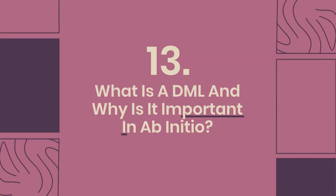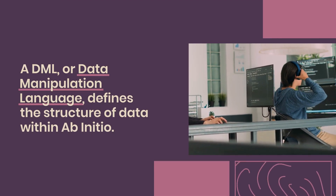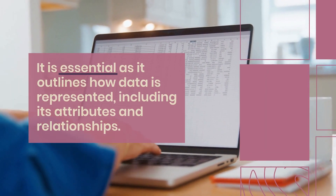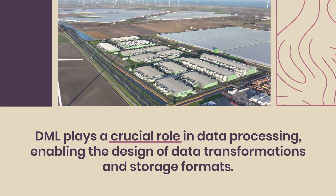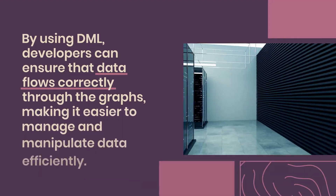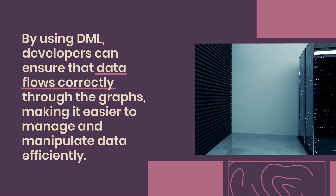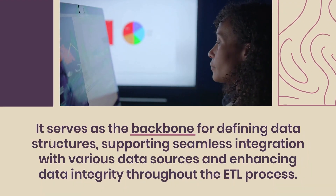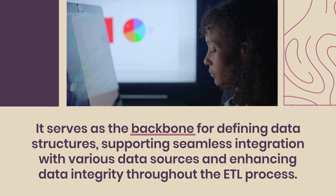Question 13: What is DML and why is it important in AbInitio? A DML, or Data Manipulation Language, defines the structure of data within AbInitio. It is essential as it outlines how data is represented, including its attributes and relationships. DML plays a crucial role in data processing, enabling the design of data transformations and storage formats. By using DML, developers can ensure that data flows correctly through graphs, making it easier to manage and manipulate data efficiently. It serves as the backbone for defining data structures, supporting seamless integration with various data sources and enhancing data integrity throughout the ETL process.